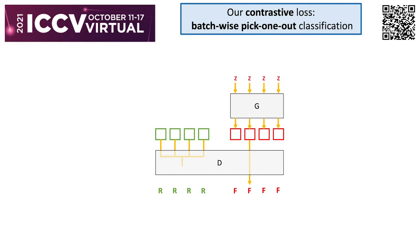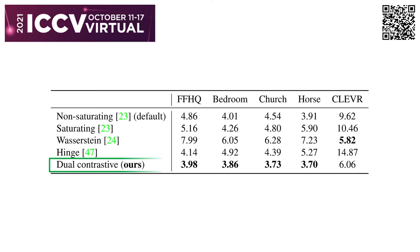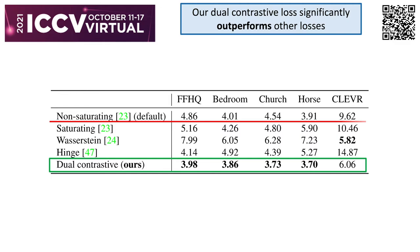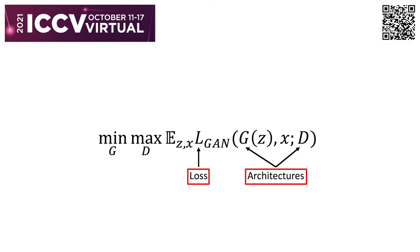Dually, in case two: one fake versus a batch of reals. The final loss is a summation over all the contrastive combinations. In the experiments, dual contrastive loss significantly outperformed several other losses, including the non-saturating cross-entropy loss in StyleGAN2.